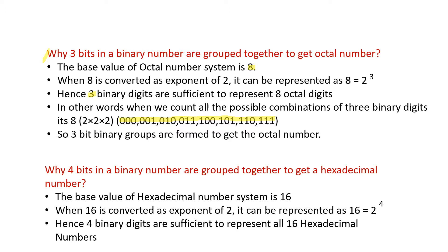Now let us look at the hexadecimal numbers. The base value of the hexadecimal number system is 16, and when 16 is represented in terms of powers of 2, we can say that 16 is equal to 2 to the power 4. So, 4 binary digits are sufficient to represent all 16 hexadecimal numbers.